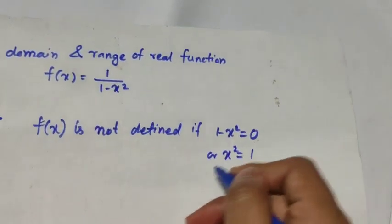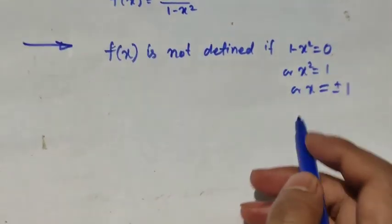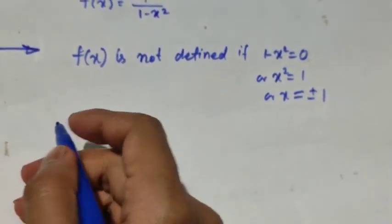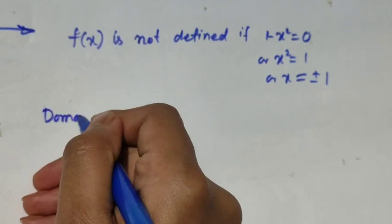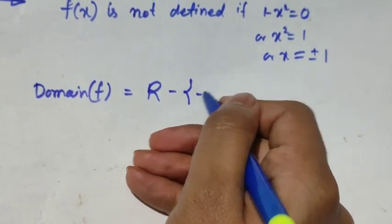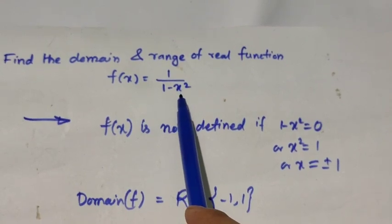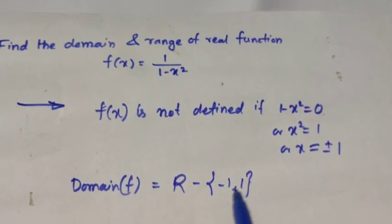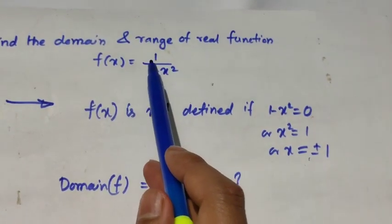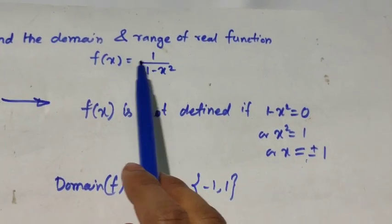Setting the denominator to zero: 1 − x² = 0 gives x² = 1, so x = ±1. Thus, for x = +1 and x = −1, the function f(x) is not defined. For either value, the function takes the form 1/0, which is undefined. Therefore, the domain of the function is ℝ − {−1, 1}, meaning x can be any real number except −1 and 1.